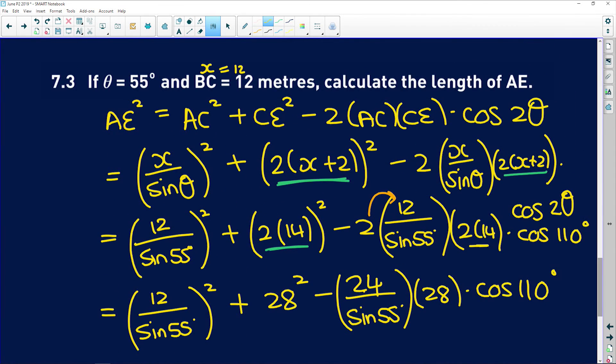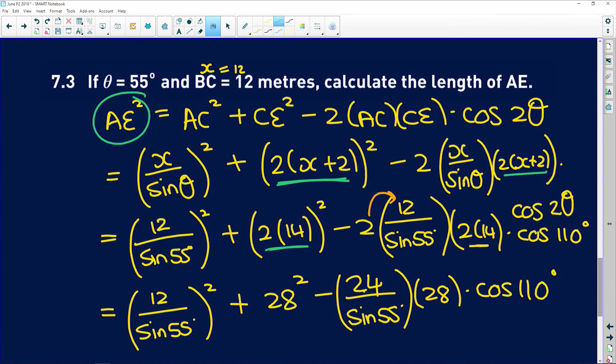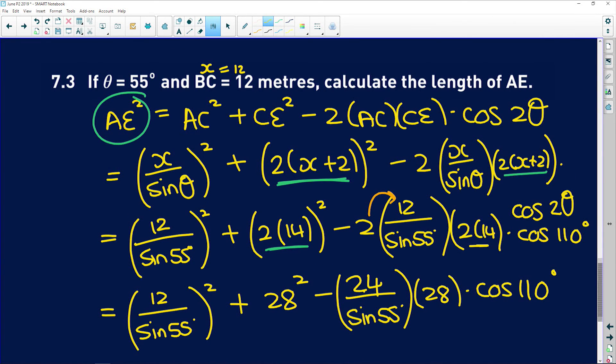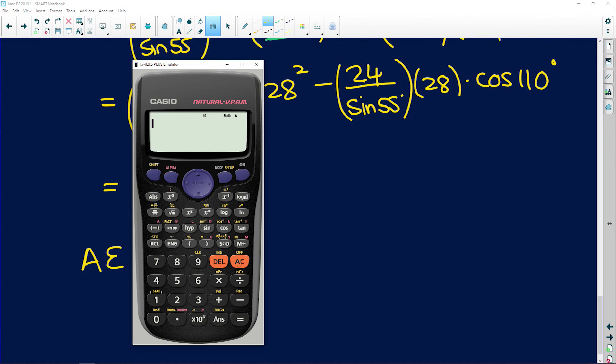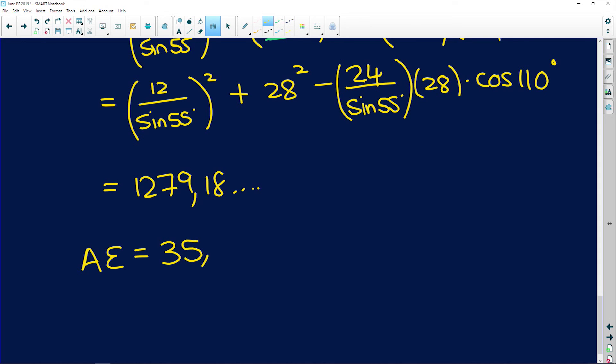But guys, remember, this is an expression for AE². So now we need to square root both sides to get AE. So you say square root of the answer, and we get 35.77. I'm going to round off to two decimal places. Remember, we're finding a length, so it's meters. Okay.